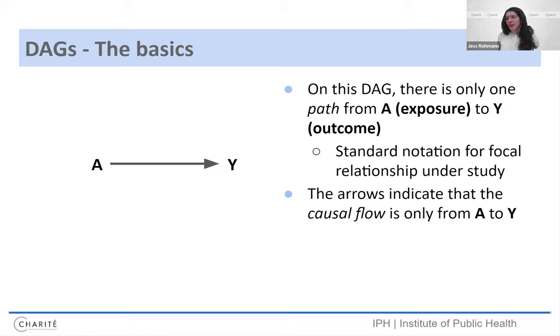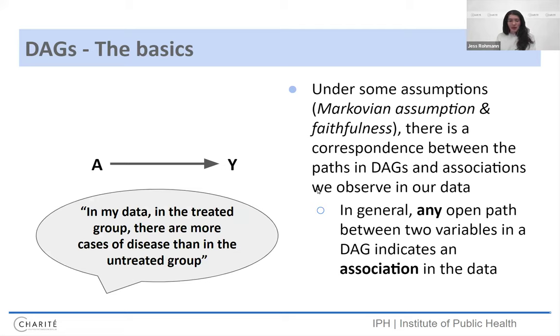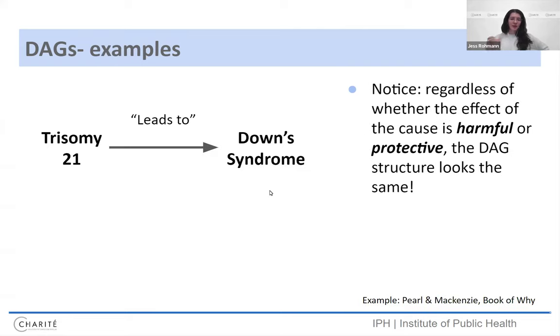But yeah, it can be this simple. And on this DAG, there's only one path from the exposure A to the outcome Y. And this is the standard notation we use for the focal relationship under study. So when I ask, what's the research question? In this case, it's what's the effect of A on Y. And the arrow indicates that the causal flow here is only happening from A to Y. So under some assumptions, which I'm not going to get into today, there's a correspondence, a direct correspondence between the paths that are shown in a DAG and associations we observe in our data. So in general, any open path between two variables in a DAG will indicate an association in the data. So if you go into your data set, you will see, for example, that in the treated group, there are more cases of the disease than in the untreated group. You'd see some kind of relationship between those two variables.